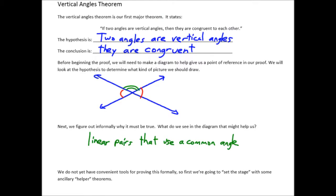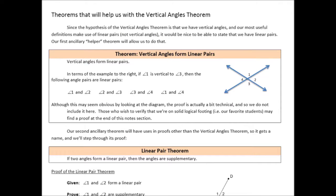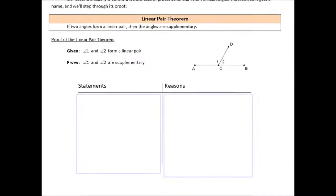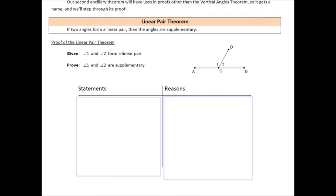To fill in those missing pieces, I've put together some helper theorems. They're a little bit easier, and they're going to give us tools that we need in order to prove the vertical angle theorem. The first helper theorem is going to be that vertical angles form linear pairs. This is a fairly challenging theorem to prove as a first theorem — we've included this at the back of this set of notes. The first proof we're actually going to walk through is called the linear pair theorem.